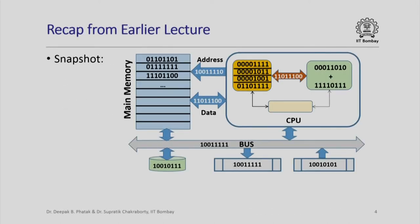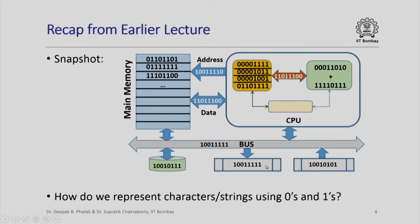From an earlier lecture you would recall this diagram where we had shown the basic structure of a simple computer, and all the components here basically have information stored as sequences of 0s and 1s. So the question we want to ask now is: how do we represent characters or strings using 0s and 1s?